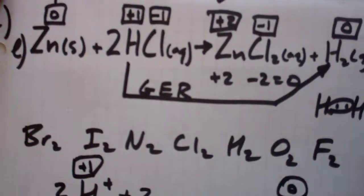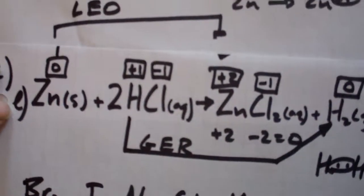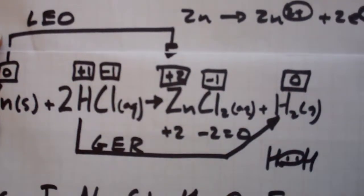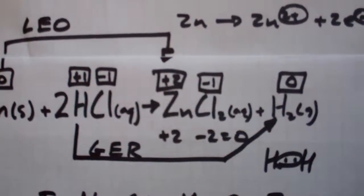So what's really going on here is that zinc is losing electrons and giving them to the hydrogen ion, which is gaining them to form hydrogen gas. And that is the reaction. Alright, try the rest.